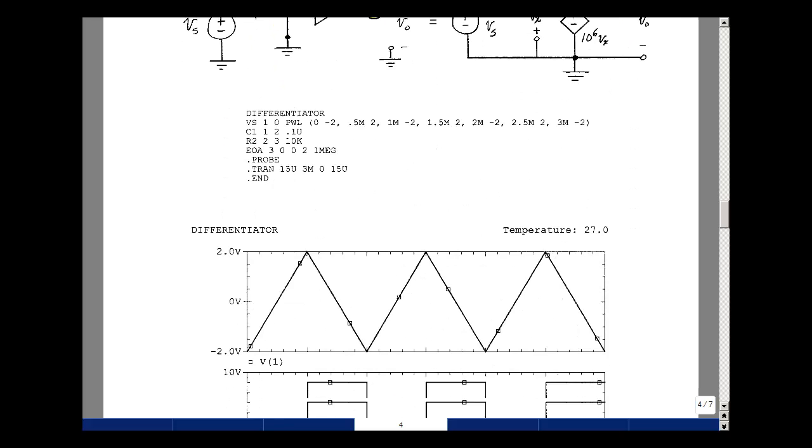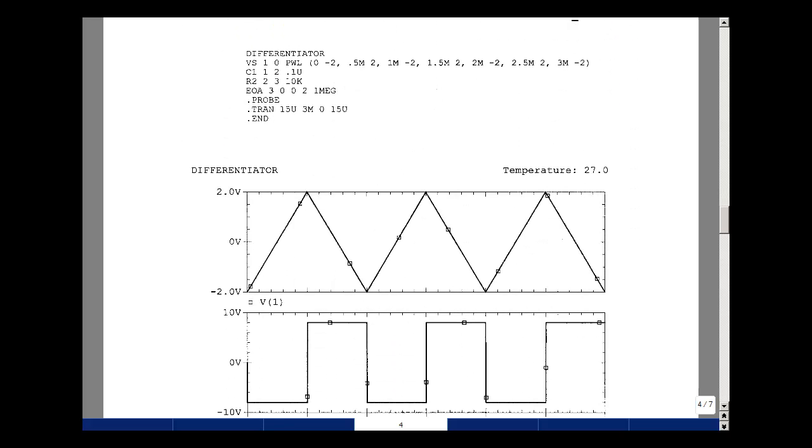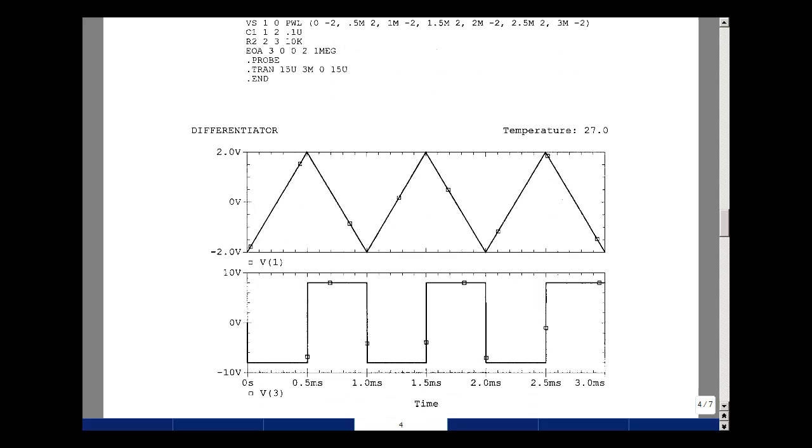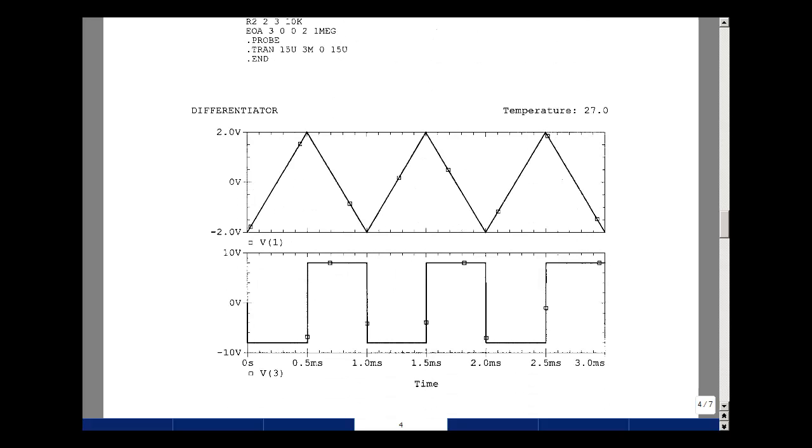What I like to do is verify that my input is what I think it is. Many times that's all that's wrong with a circuit is that you've misprogrammed the voltage source. So let's take a look at node voltage 1. So I go from minus 2 to plus 2 volts. And let's repeat that. I did that out to 3 milliseconds.